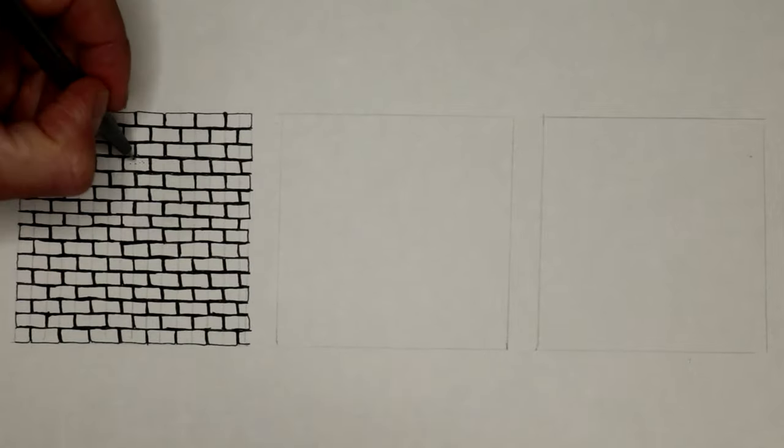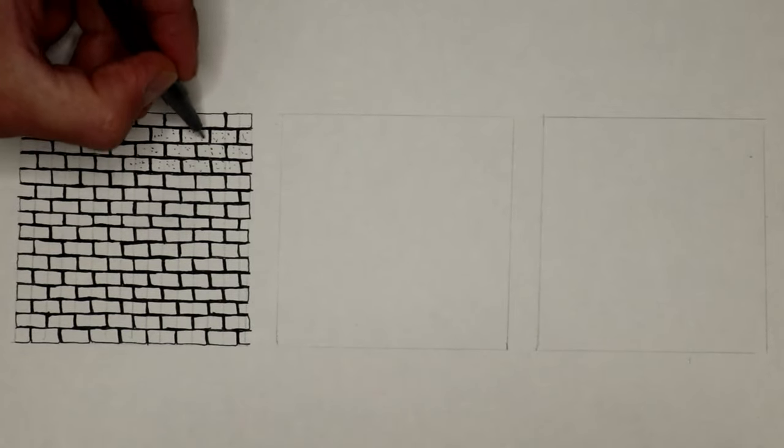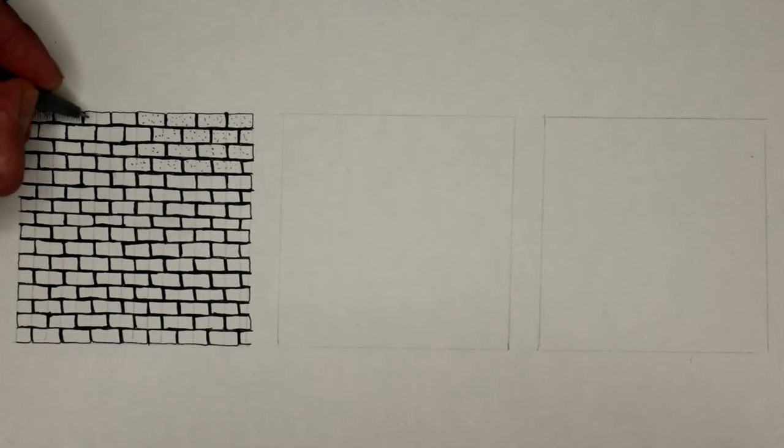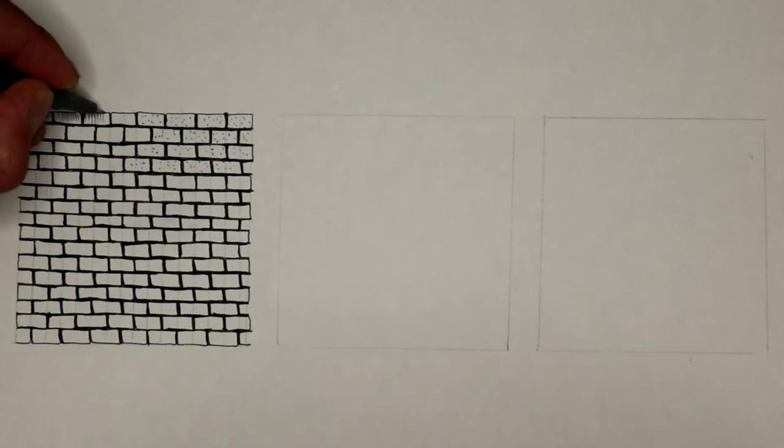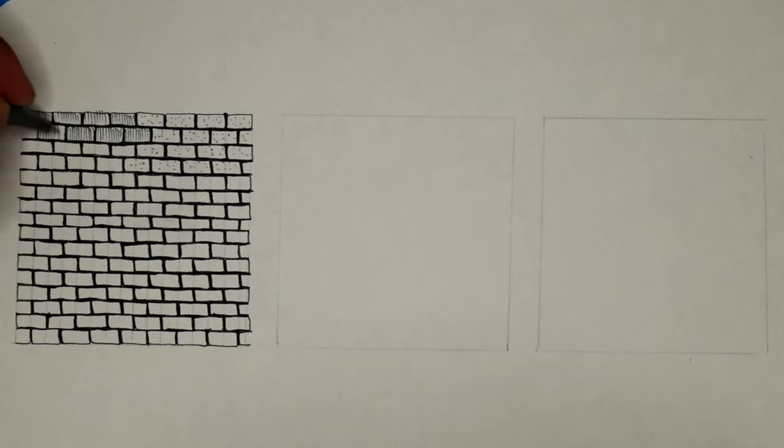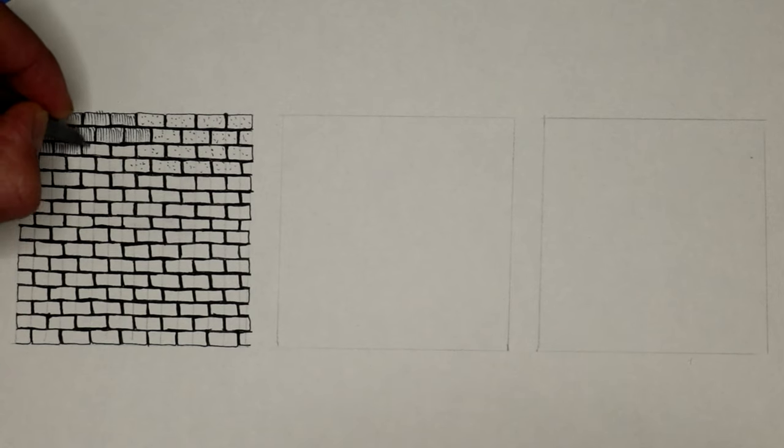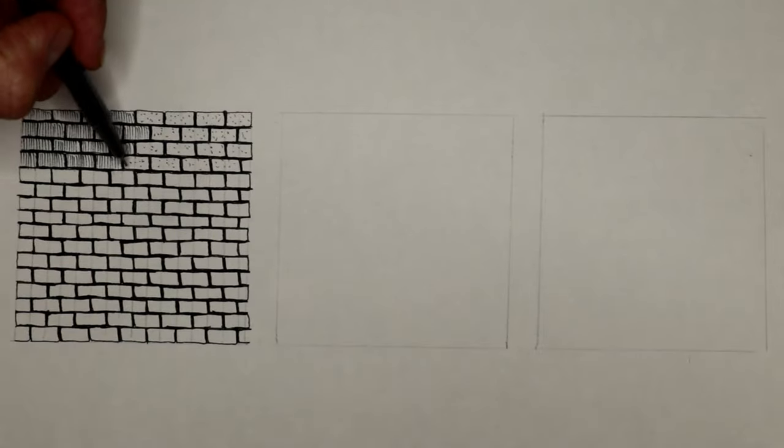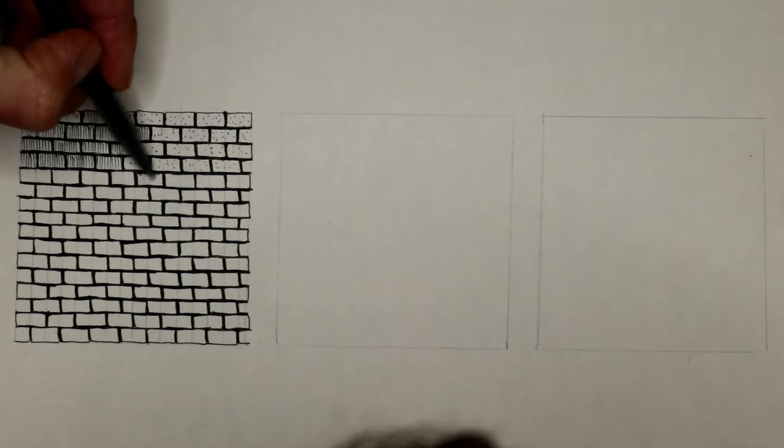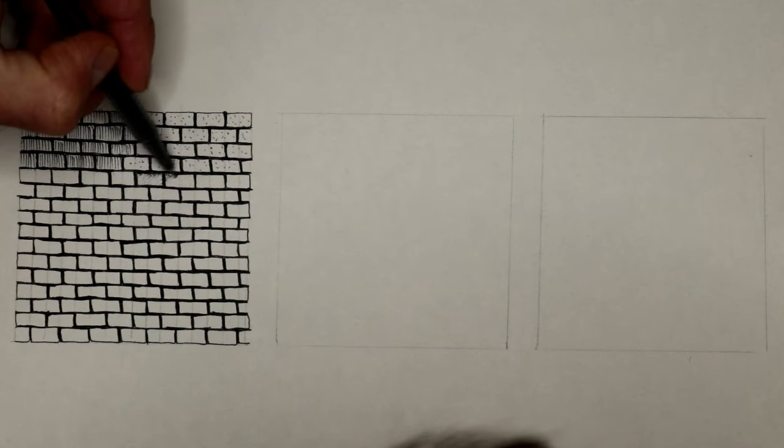I'm just going to show different techniques here. I'm just putting some dotted dots on the brick—that's just one idea. Or you can do some vertical line hatching as well.